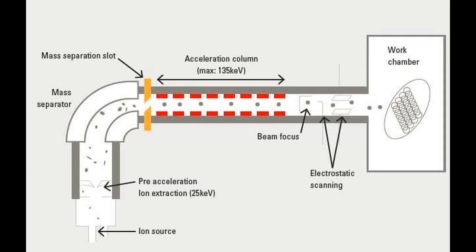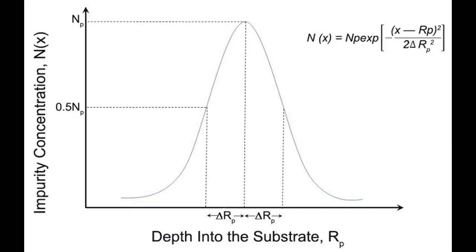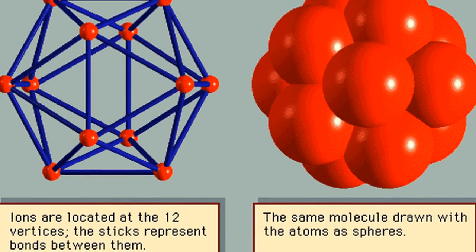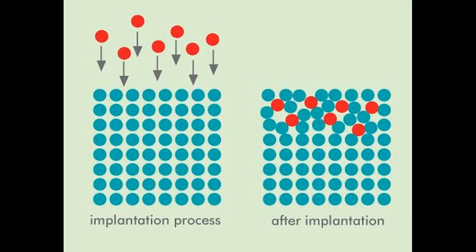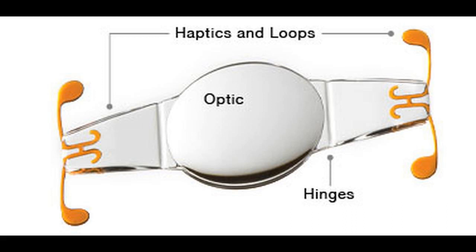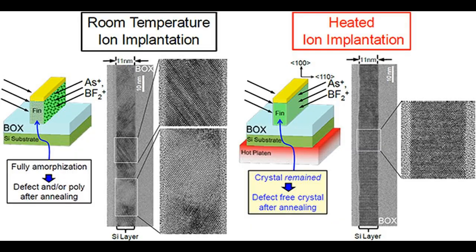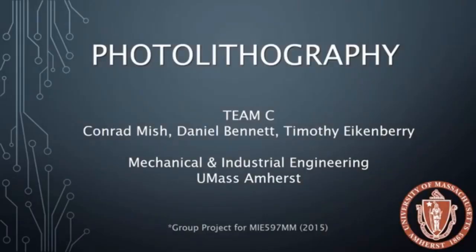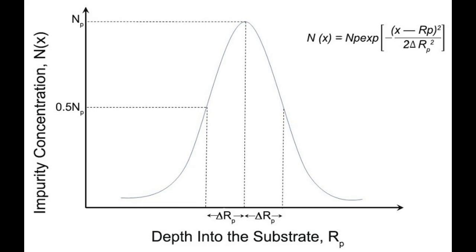Each ion is typically a single atom or molecule, and thus the actual amount of material implanted in the target is the integral over time of the ion current. The energy of the ions, as well as the ion species and the composition of the target, determine the depth of penetration of the ions in the solid. A mono-energetic ion beam will generally have a broad depth distribution.